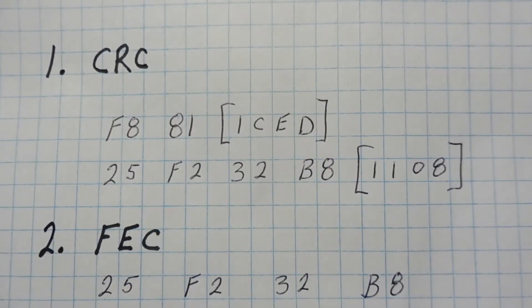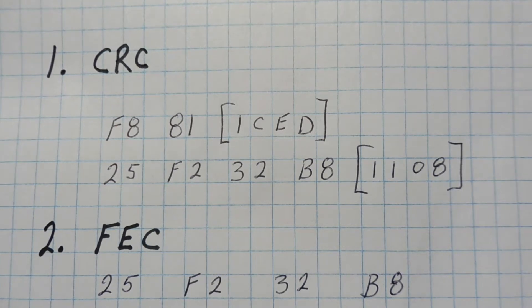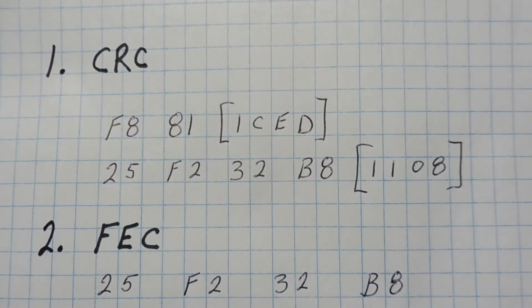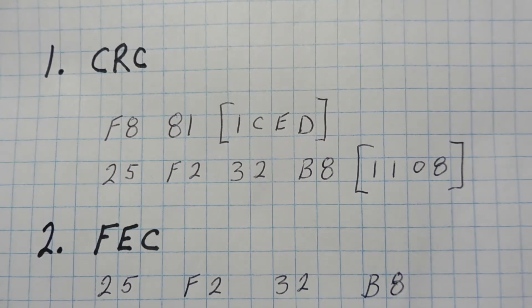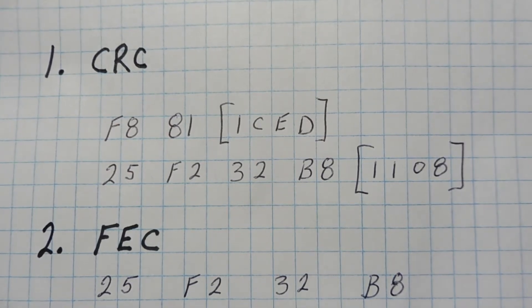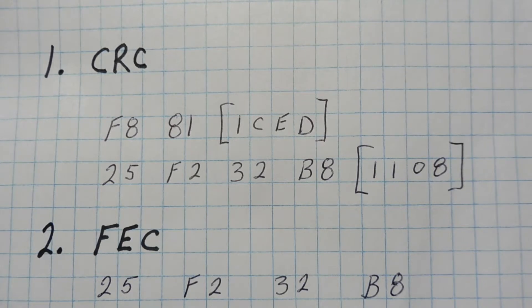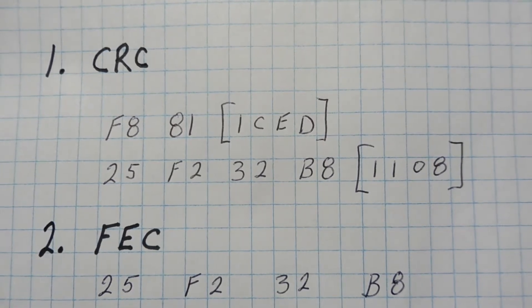Okay, this is part 2 video of data error detection and data error correction. Now in part 1 video, we looked at CRCs, Cyclic Redundancy Checks, which is a data error detection protocol, and we learned how to calculate a 16-bit CRC checksum using the data bytes in the data packet.